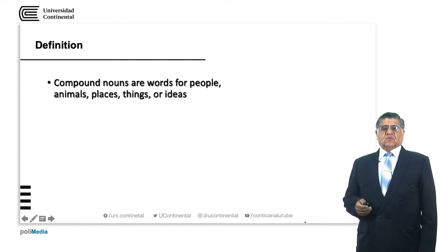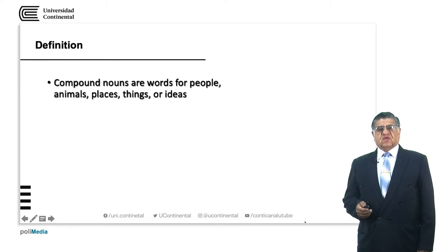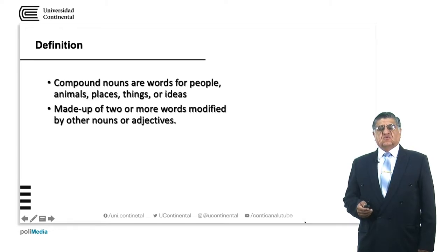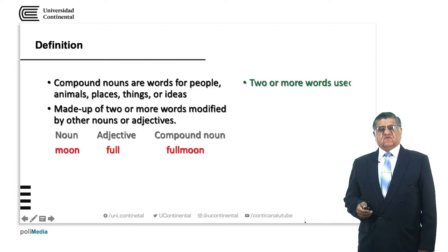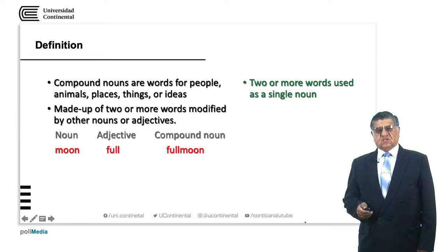A compound noun or compound nouns are words that define people, animals, places, things or ideas. Mainly they have two words, or one word made up from two different ones. Some others will have adjectives, adverbs and so on. For example, we have a noun 'moon', we have an adjective 'full', and we have a compound noun: 'full moon'. So we are using two words as a single noun.